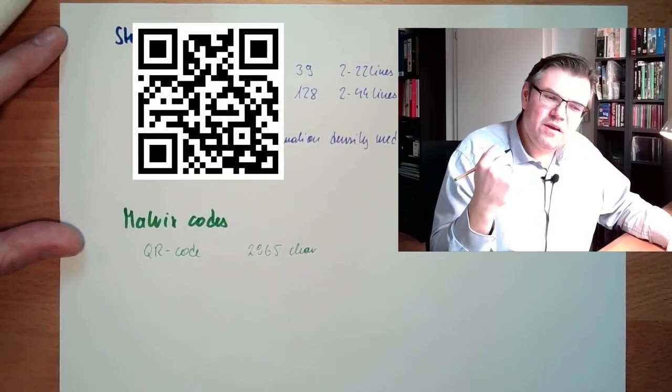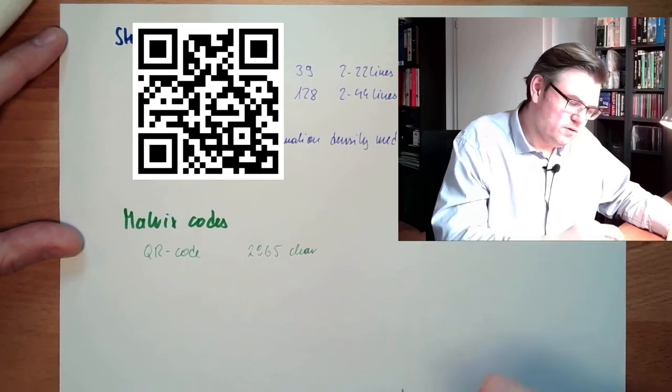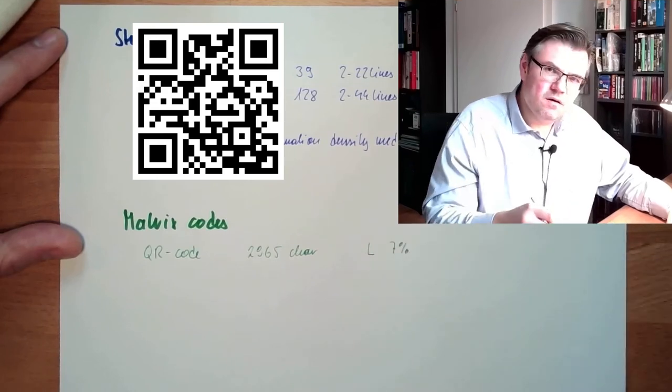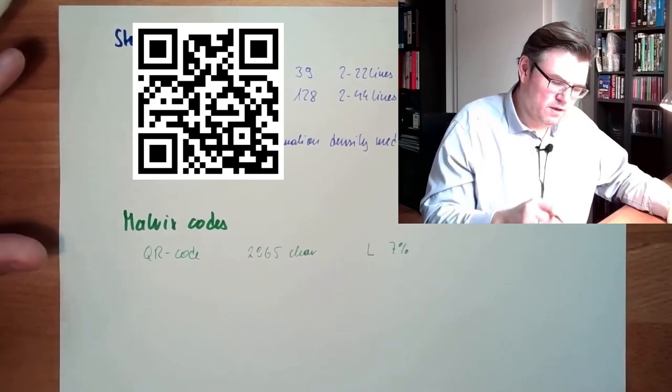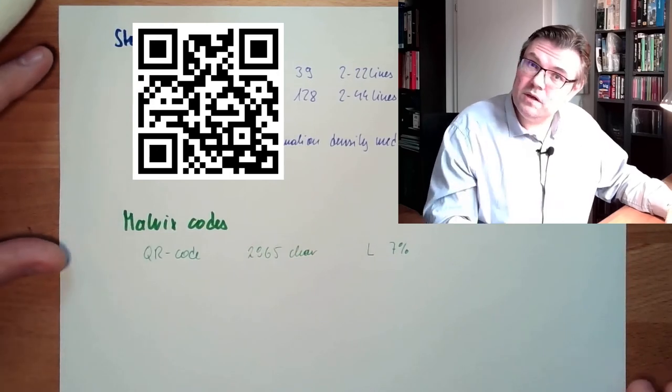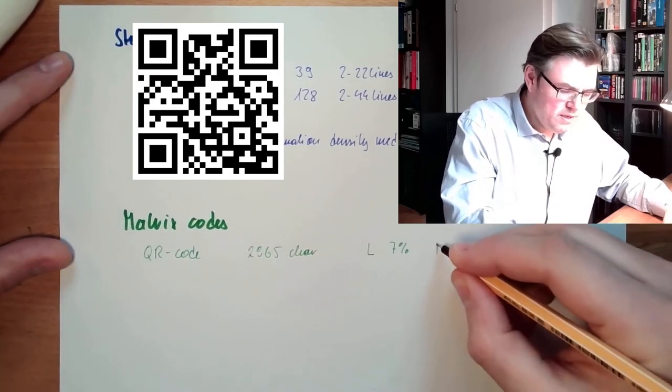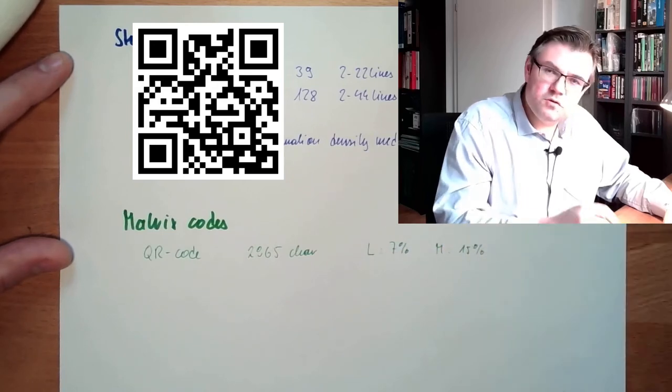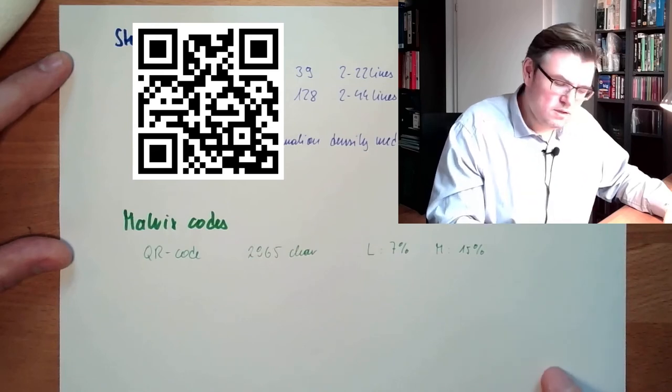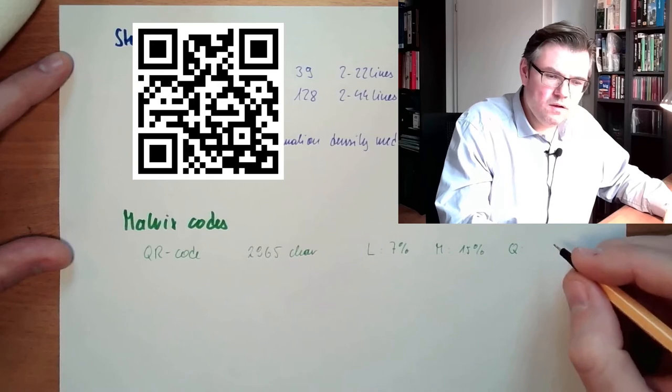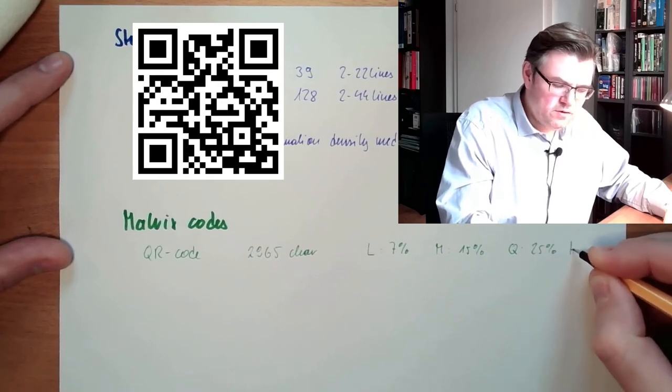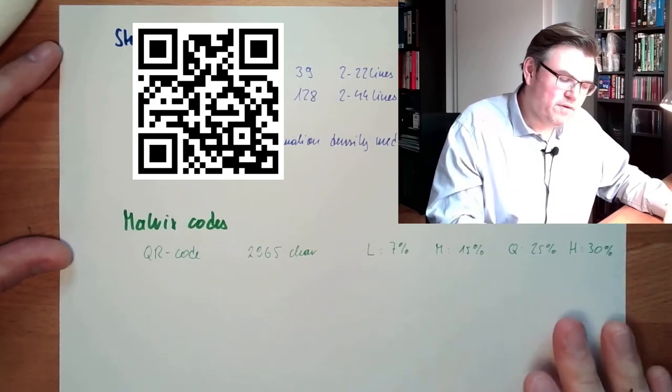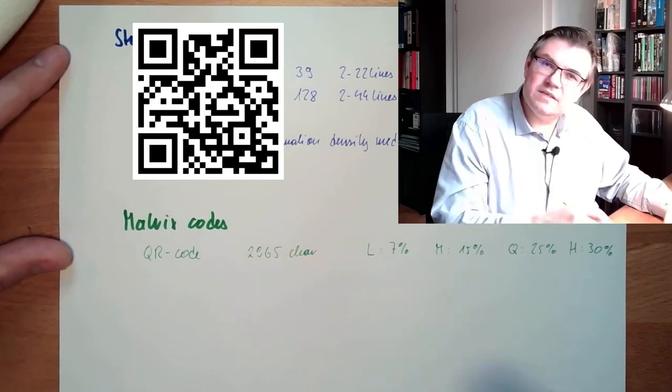What makes this code really strong is that there are different error correction levels. There is the error correction level Low, where 7% of the code might be destroyed and still can be read. Then there's Medium, where 15% of the surface might not be readable and still can be decoded. Then there's the Q level at 25%, and there is the High level at 30%. Depending on the level of error correction, we have more or less characters available.